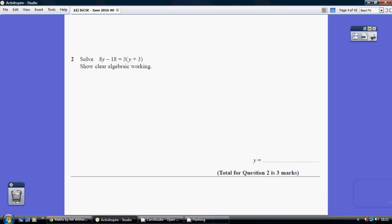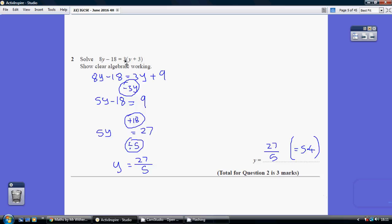Question 2. Start off by multiplying out the brackets, so 3 times y is 3y and 3 times 3 is 9.